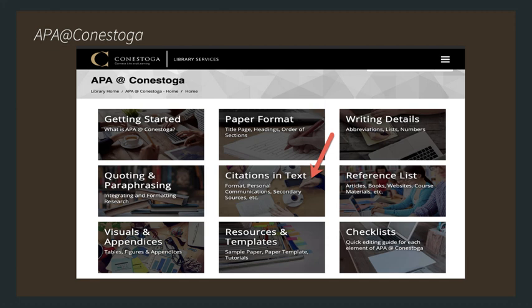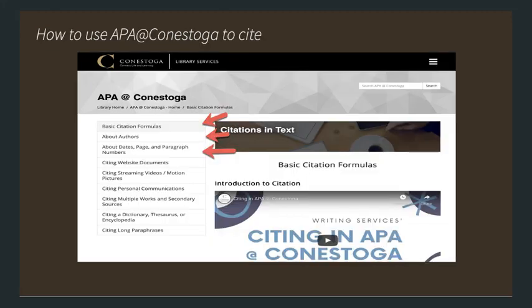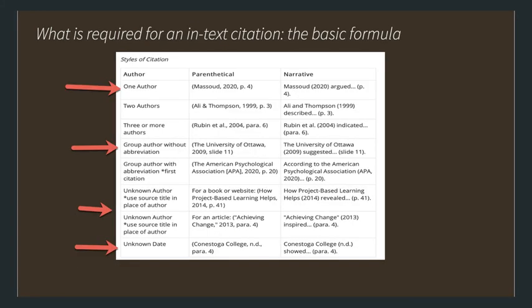When you click on the Citations in Text box, it will take you to the page showing the basic citation formulas about authors, dates, page and paragraph numbers. There's also information about citing web documents, streaming videos or motion pictures, and personal communications. The parenthetical method is probably the easiest to use if you're just starting. After your quote, paraphrase, or summary, in brackets at the end of the information, you'll have the author's last name, a comma, the year, a comma, and then the page or paragraph number. For a page, it's 'p.' and the number.